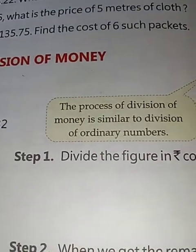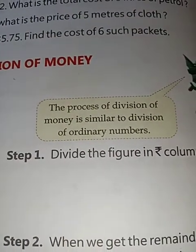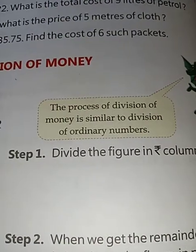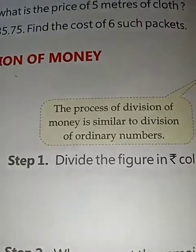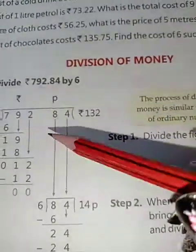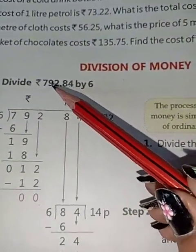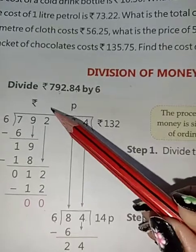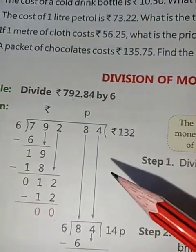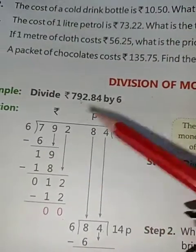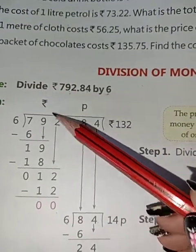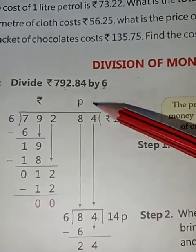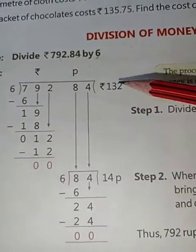The process of division of money is similar to division of ordinary numbers. When you write the statement and rupee and paise columns are given, divided by addition or subtraction, we will divide. Firstly we will solve the rupee column and after that we will solve the paise, and whatever answer we get, we will write.